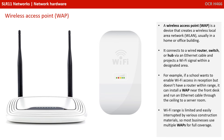A wireless access point is a device that creates a wireless local area network, usually in a home or office building. It connects to a wired router, switch or hub via an ethernet cable and projects a Wi-Fi signal within a designated area.